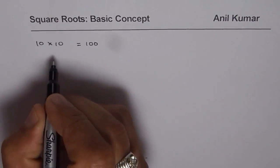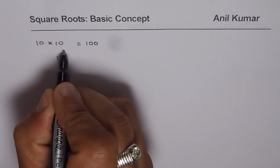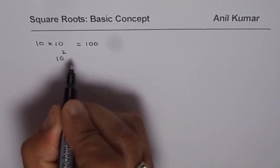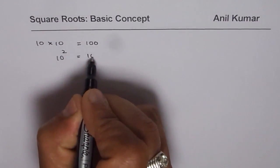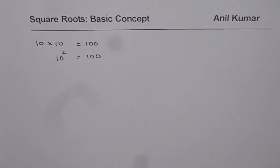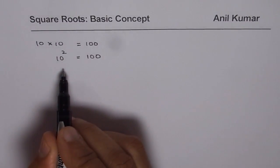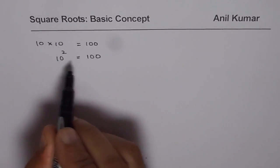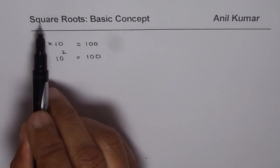Now 10 times 10 can also be written as 10 square. So we say square of 10 is 100. Now the reverse process to get 10 from 100, we have square root.